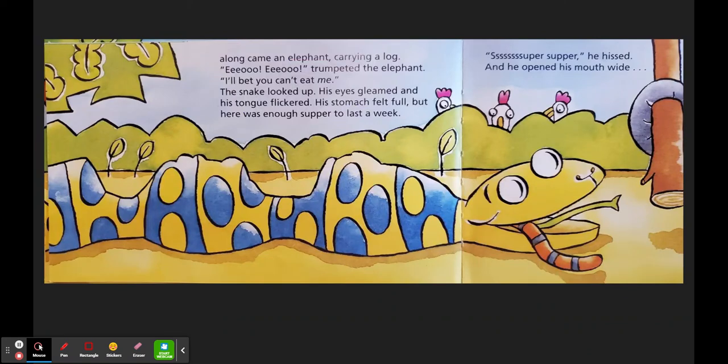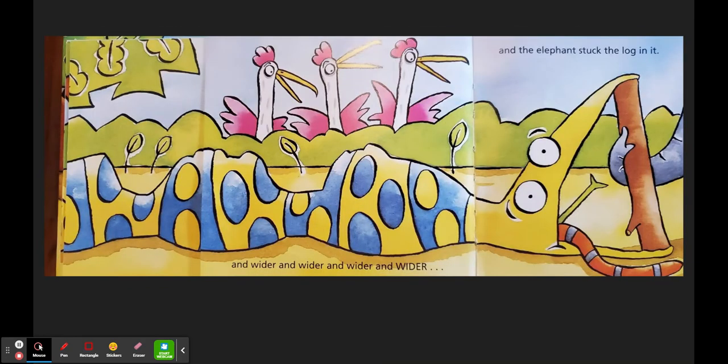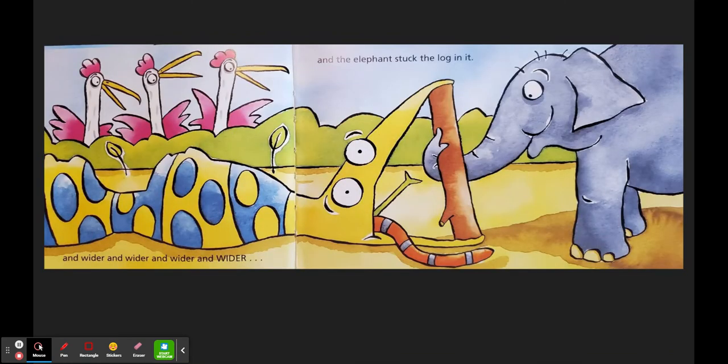When along came an elephant carrying a log. What's an elephant sound like? Eww! Eww! trumpeted the elephant. I bet you can't eat me! Hey, and what are those bumps in your belly? Ha-ha-ha! The snake looked up. His eyes gleamed and his tongue flickered. His stomach felt full. But here was enough supper to last a week. Super supper! he hissed. And he opened his mouth wide and really wide and wider and wider until the elephant stuck his log right in the snake's mouth. The snake was stuck.